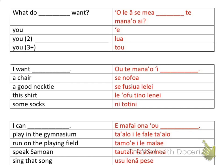Moving on to the next set of phrases: 'what do you want' — singular you, dual you, and plural you. Singular: 'O lea sa'i mea ai te mana'o ai.' Talking to two people: 'O lea sa'i mea lua te mana'o ai.' Plural: 'O lea sa'i mea to te mana'o ai.'